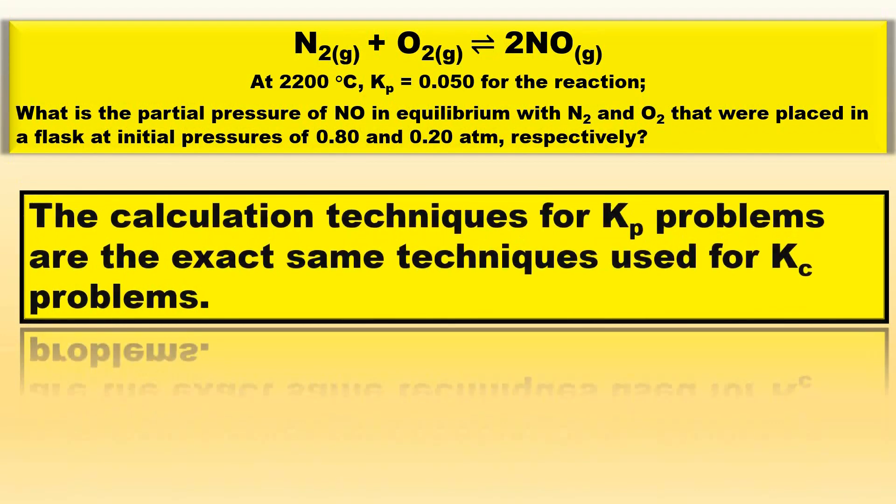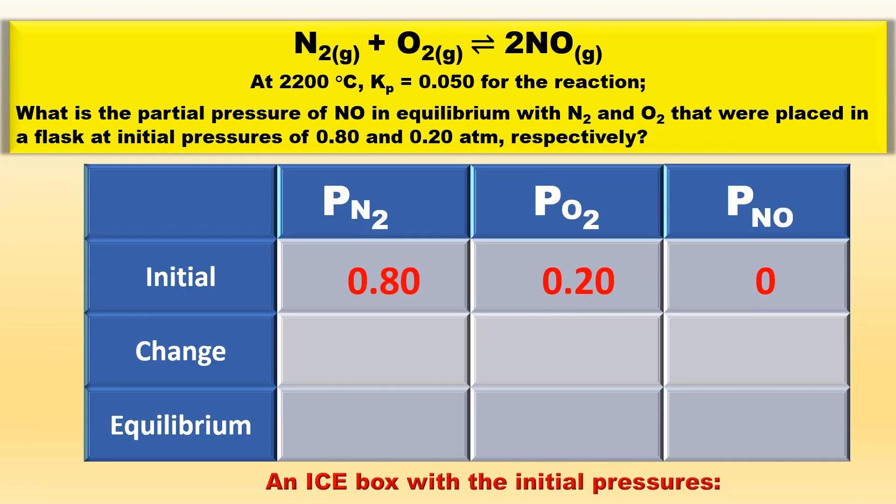The calculation techniques for Kp problems are the exact same techniques used for Kc problems. Begin by drawing an ICE box which contains the initial pressures where the pressure of N2 is 0.80 atm, the initial pressure of O2 is 0.20 atm, and the initial pressure of NO is 0.0 atm.